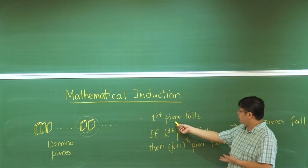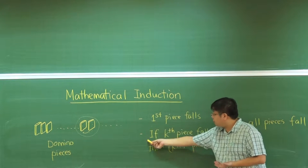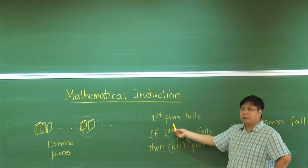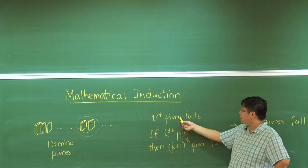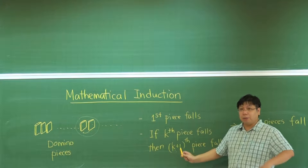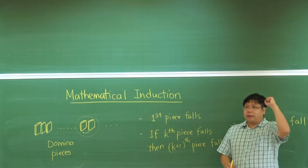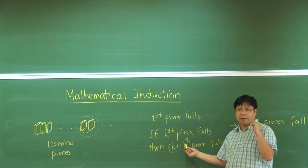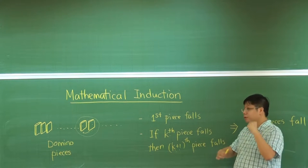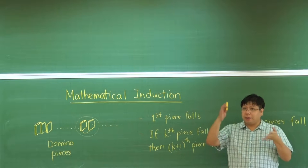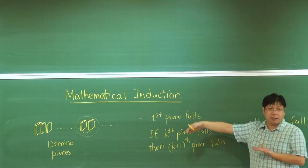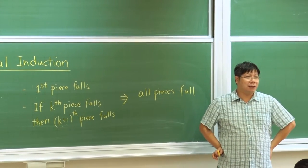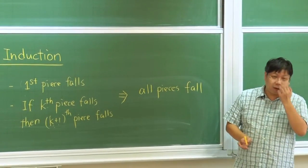You can think about this as: because the first piece falls, and because we have this statement, we know that the first piece falling implies the second piece falls. By modus ponens, we know the second piece will fall. Now with the second piece fallen as a mini-conclusion, we apply: if the second piece falls, the third piece falls. By modus ponens again, the third piece will fall. We repeatedly apply this again and again, and we notice that for any piece in the sequence, it will also fall. This is the basic concept of mathematical induction.